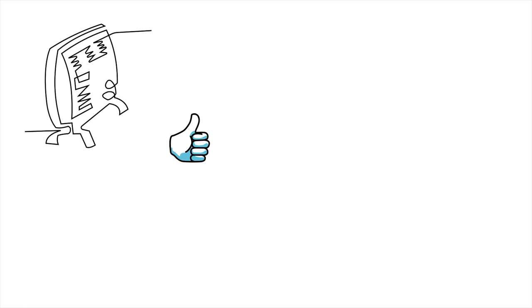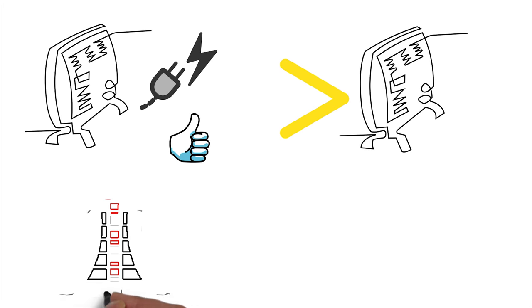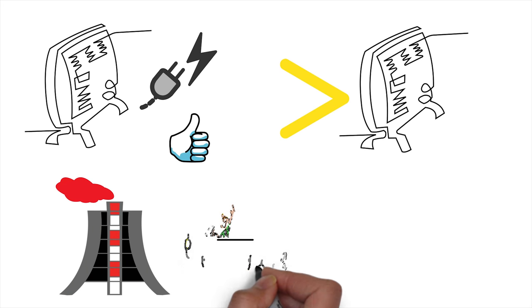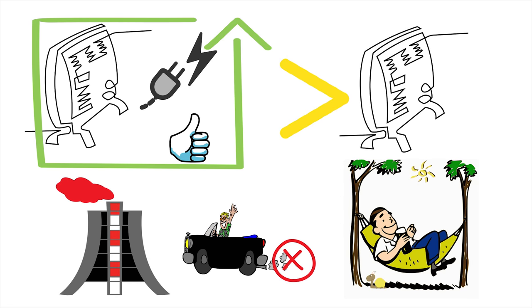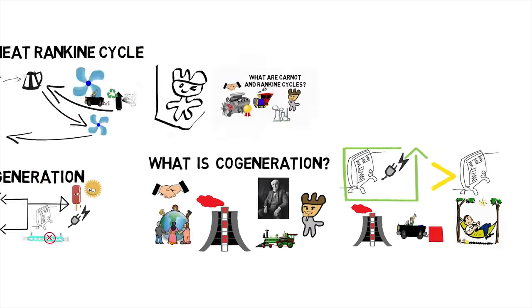Cogeneration is more thermally efficient use of fuel than producing process heat alone, because in electricity production, some energy must be rejected as waste heat. But when combined with cogeneration, some of this thermal energy is put to good use.